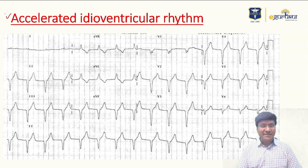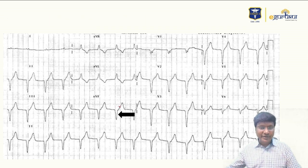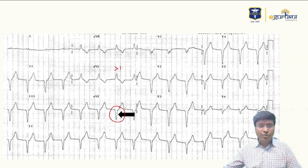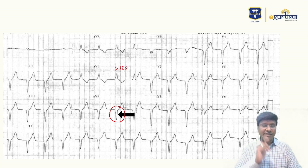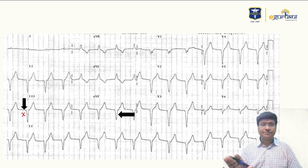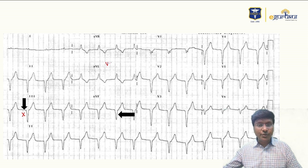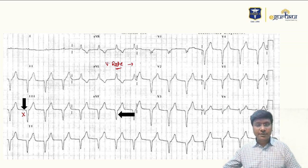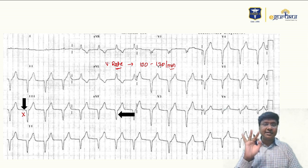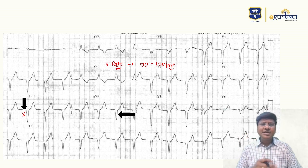To identify accelerated idioventricular rhythm: first, the ventricular complexes show broad QRS complexes — the QRS duration will be more than 120 milliseconds. Second, there is no P wave — the P wave is absent. Third, the ventricular rate will be in the range of 100 to 120 per minute. These three are the important features of AIVR.